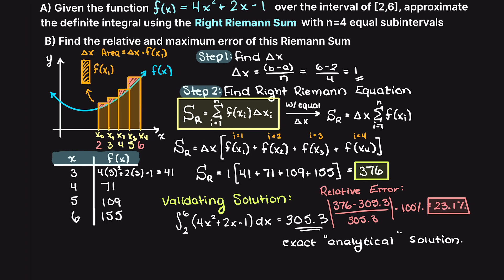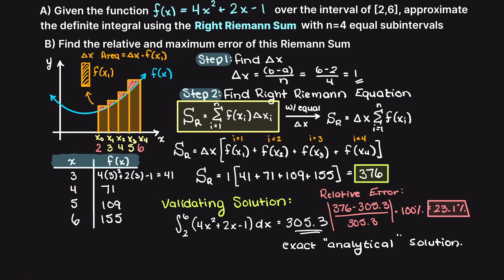Next, we need to find what the maximum error of this Riemann sum is. We learned in a previous video that when we have equal step sizes, our maximum error of a Riemann sum is going to be the absolute difference between our function evaluated at our endpoint, and our function evaluated at our initial point, times our step size. This results in a maximum error of 114.